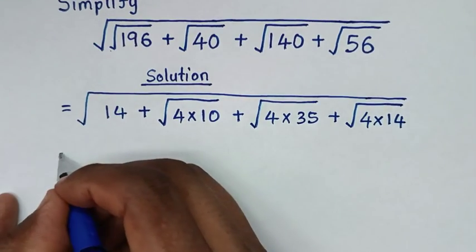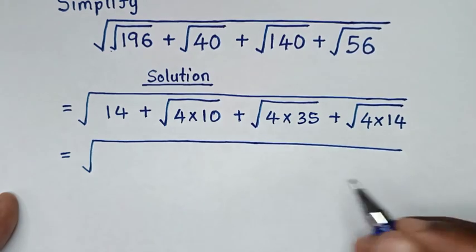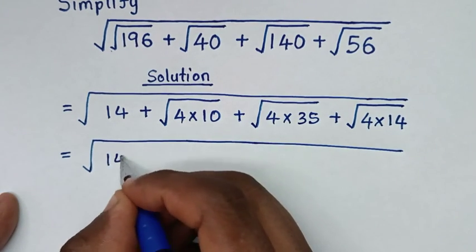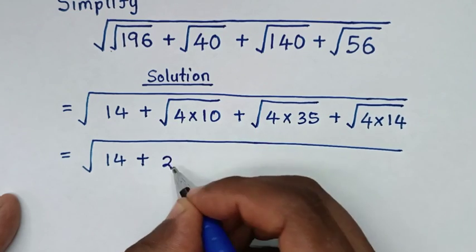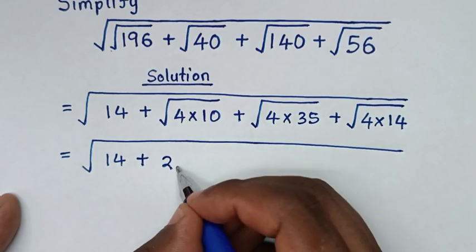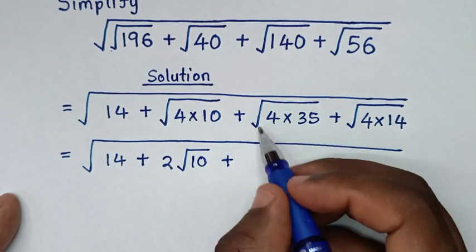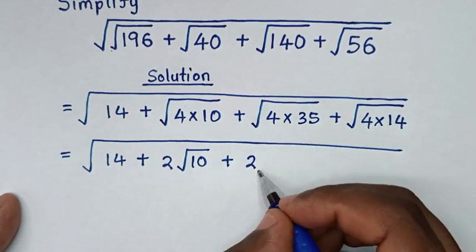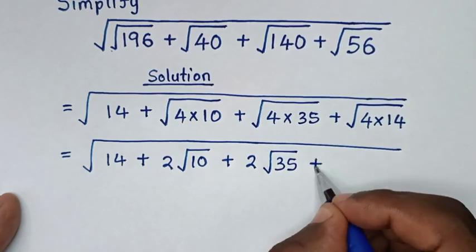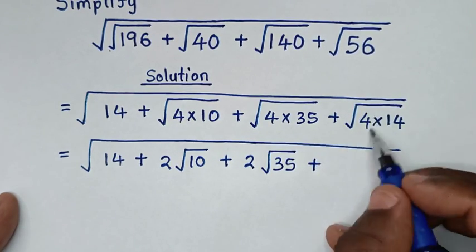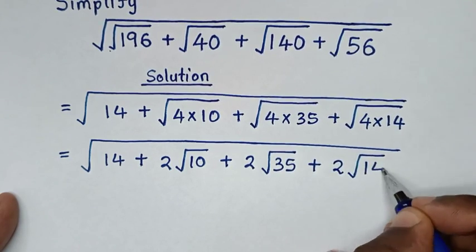Then in the next step it will be equal to square root of 14, then plus square root of 4 — which is 2 — times square root of 10, then plus 2 times square root of 35, then plus 2 times square root of 14.